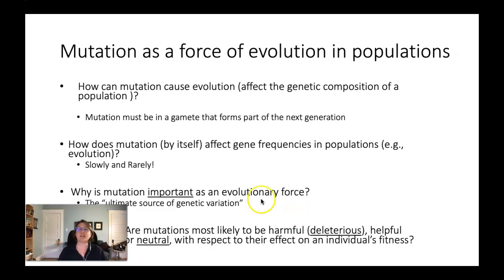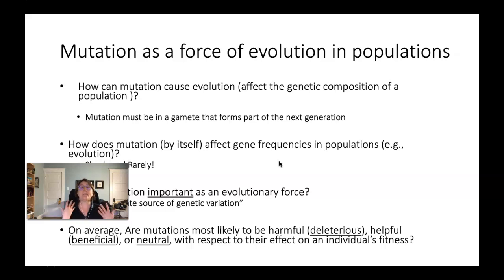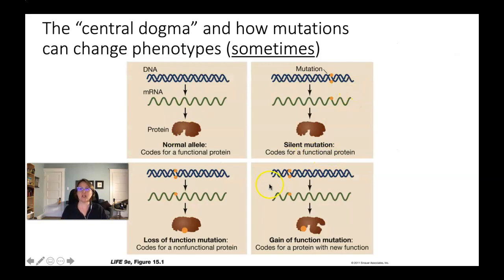On average, mutations are more likely to be harmful or neutral — and actually most likely to be neutral — with respect to their effects on an individual's fitness. When thinking about how selection works with mutations, selection generally doesn't pay attention to most mutations because most don't affect the phenotype. The ones that do affect phenotype mostly do so in a negative way, not a positive one.